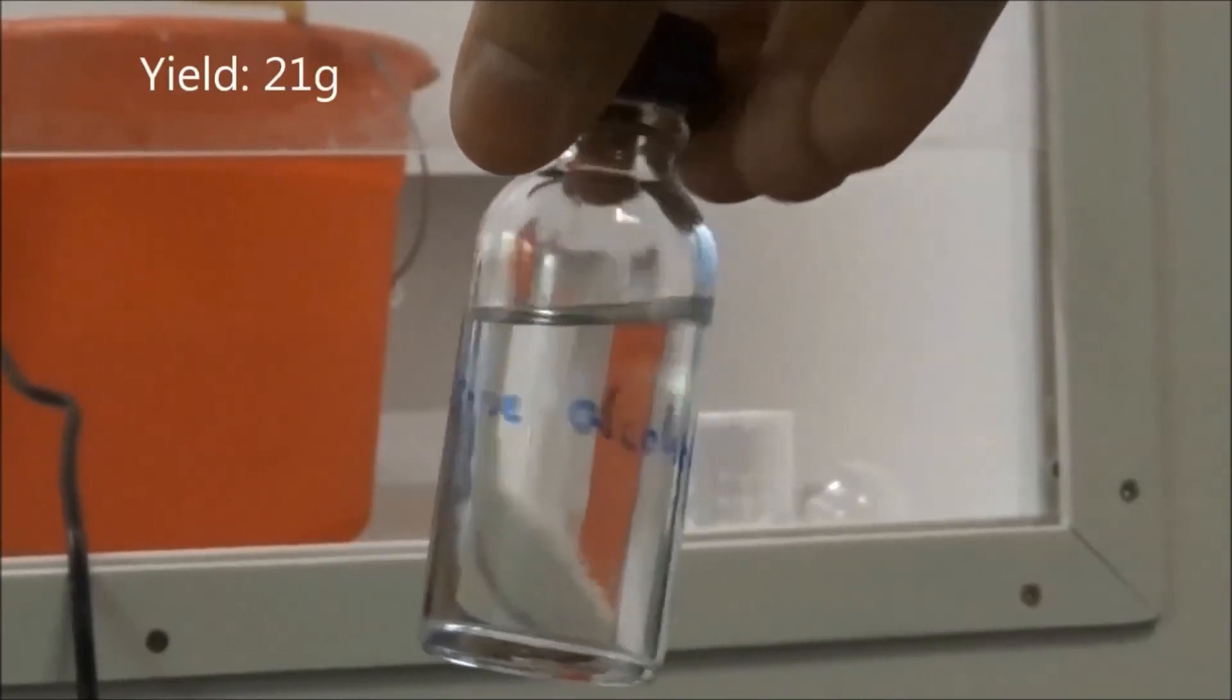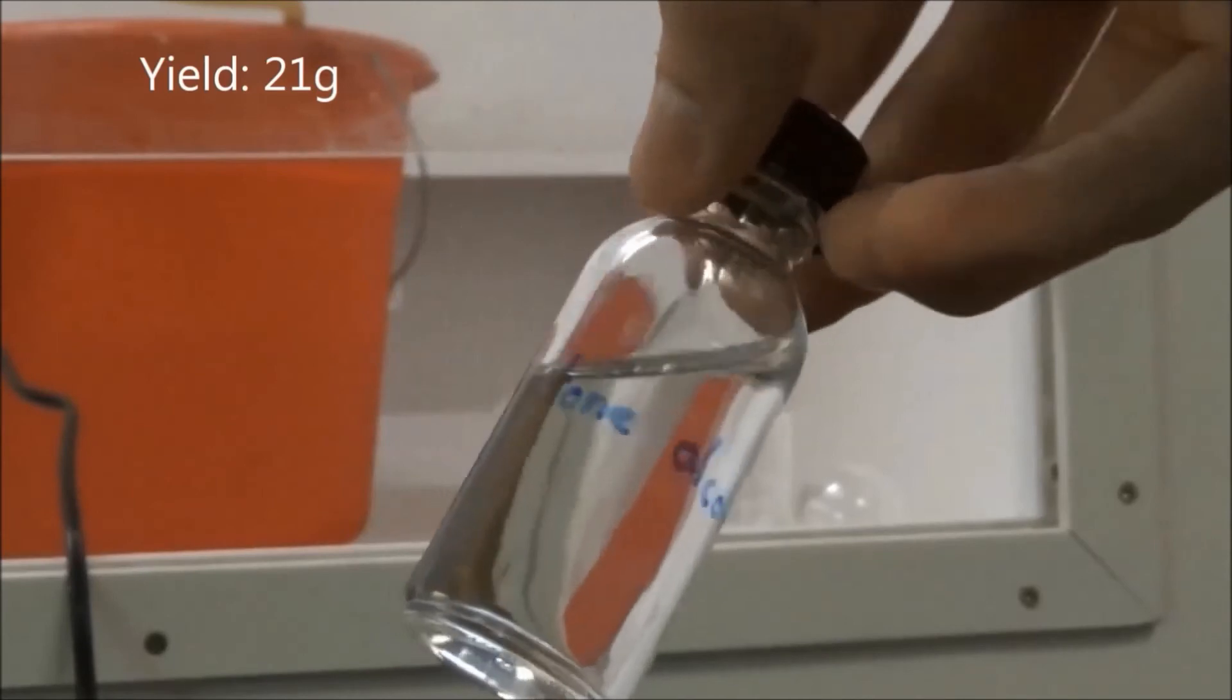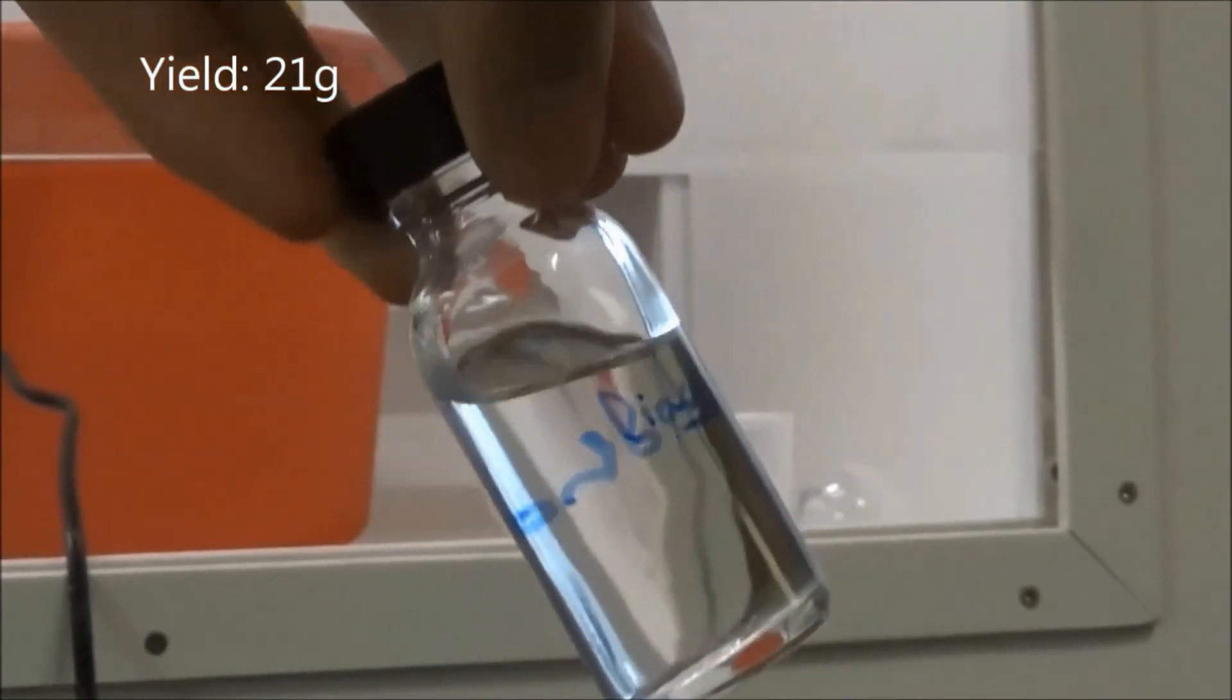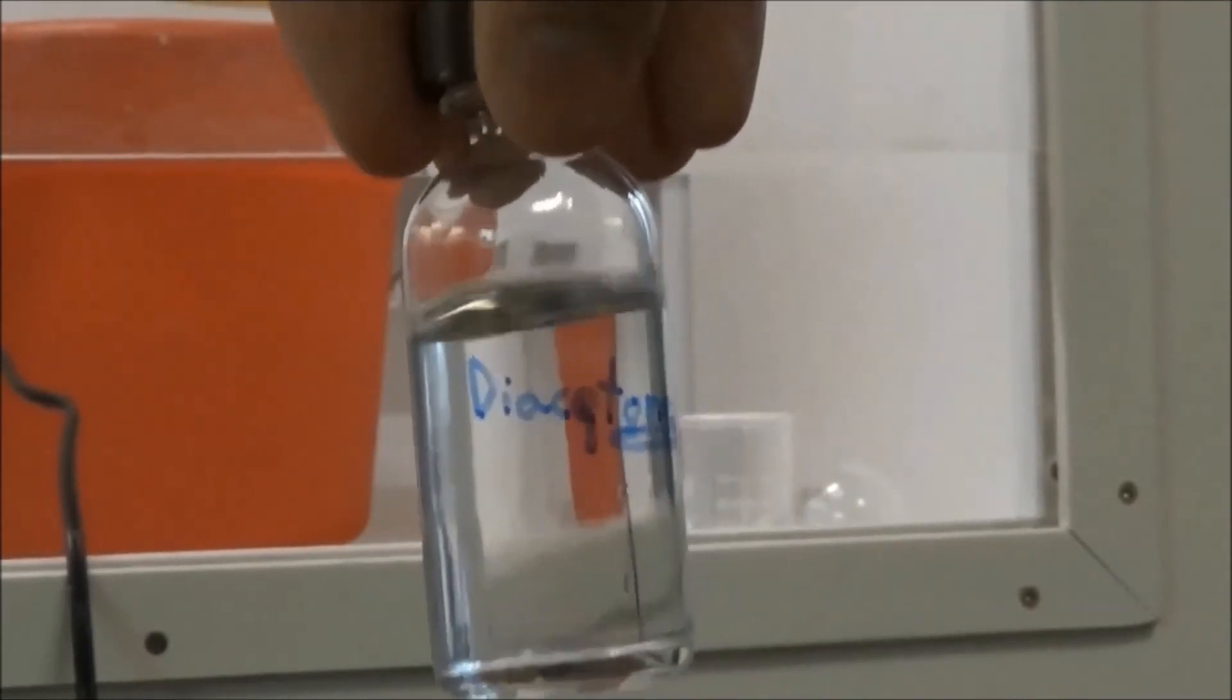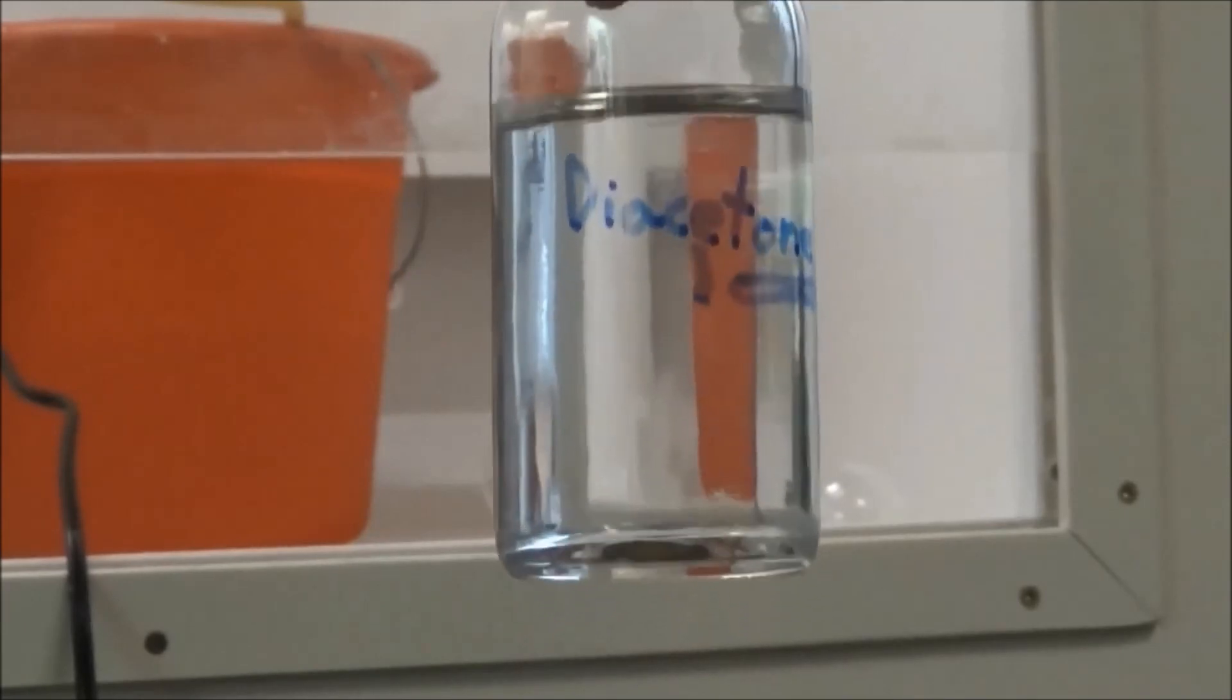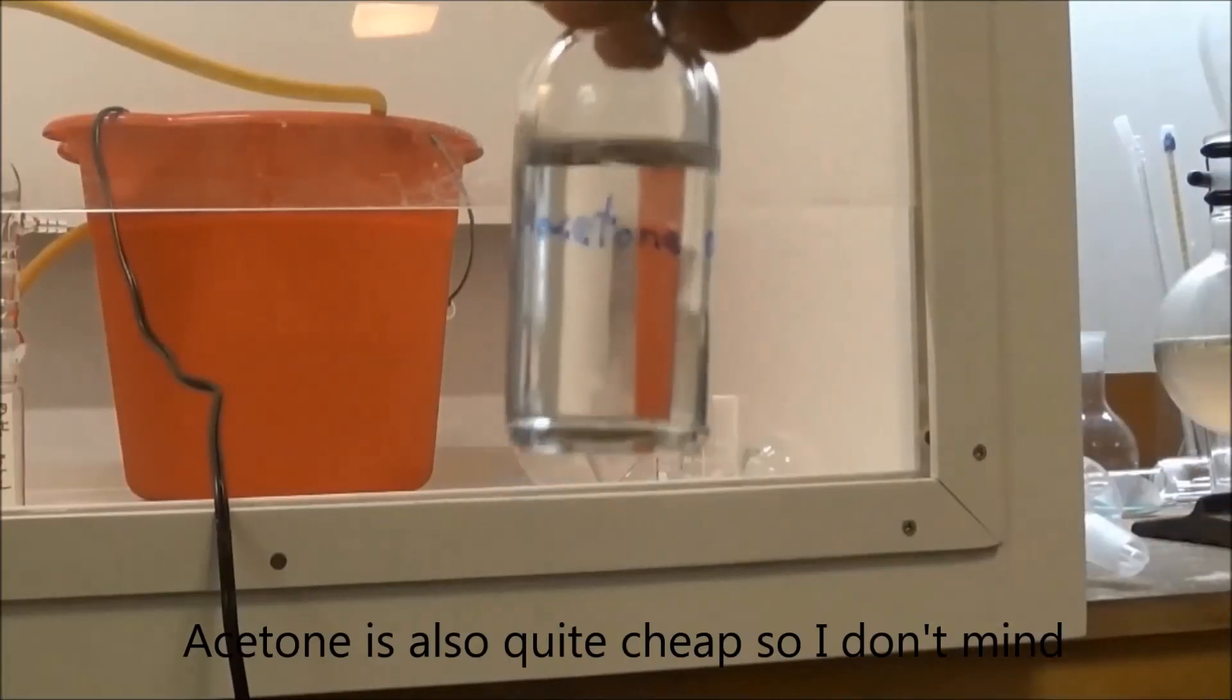The yield was 21 grams of diacetone alcohol. The low yield is because my Soxhlet was only run for 35 hours. However, all of the unchanged acetone can be reused.